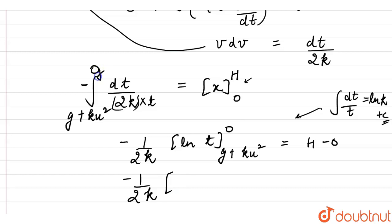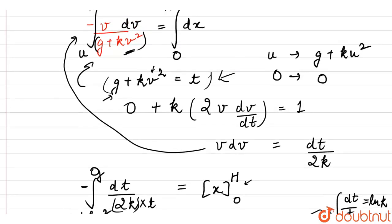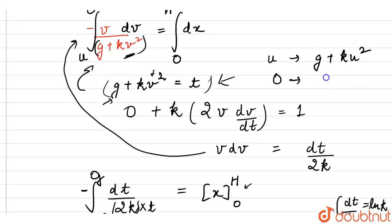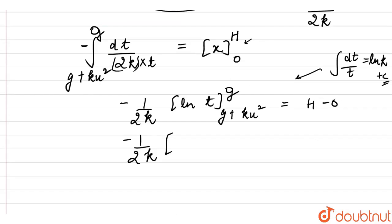The upper limit was g. When the velocity becomes 0, t becomes g. This becomes ln g minus ln g plus k u squared. This becomes equal to H.